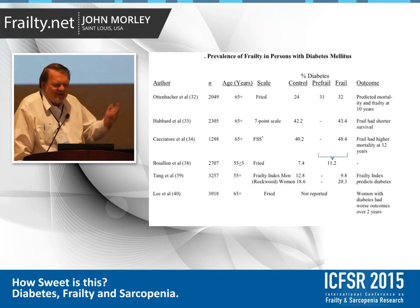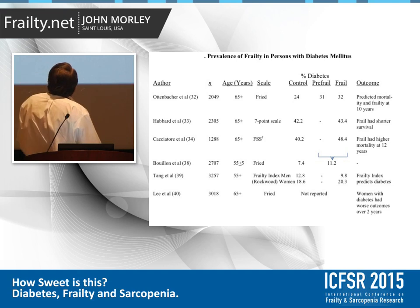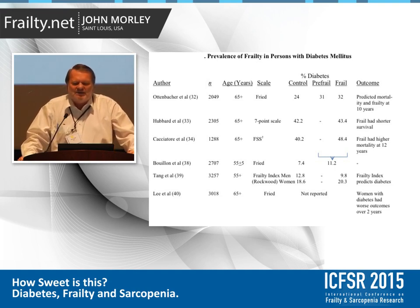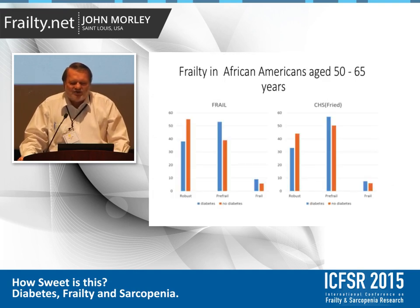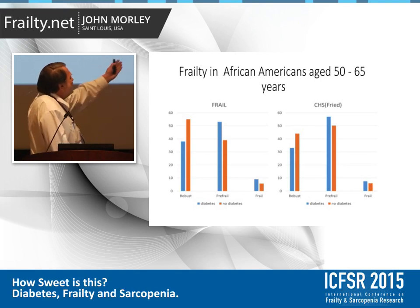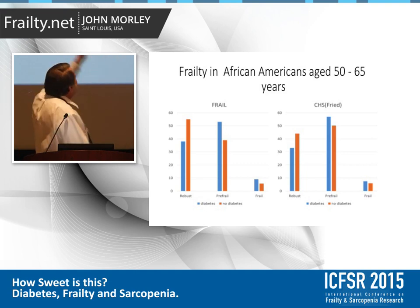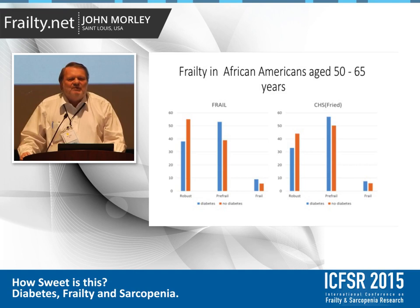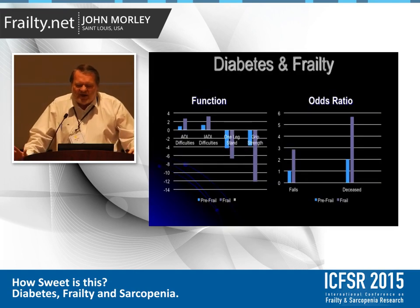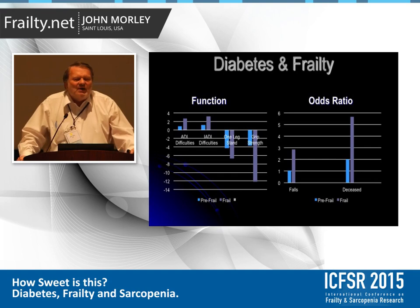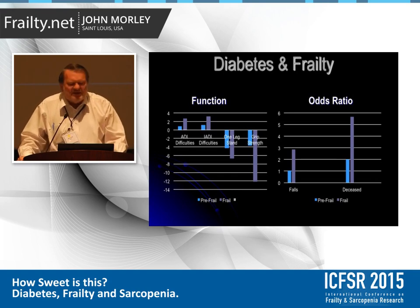If you look at the data, frailty is relatively common in all studies done in diabetics. There is an increased frailty in diabetics — shown in our African American study using our FRAIL criteria, and also using the CHS Fried criteria — diabetics are more likely to be pre-frail and more likely to be frail. When we look at function in diabetics, those who are frail are more likely to have ADL disabilities, high ADL disabilities, poor one-leg stand, and poor grip strength. They're also more likely to fall, and more likely over nine years of follow-up to be deceased.